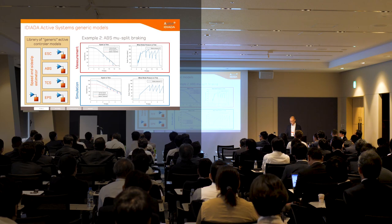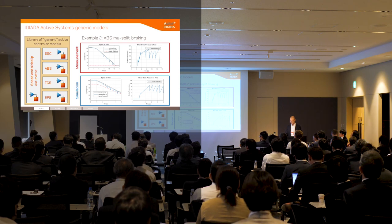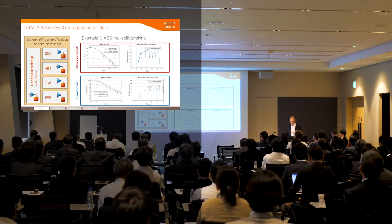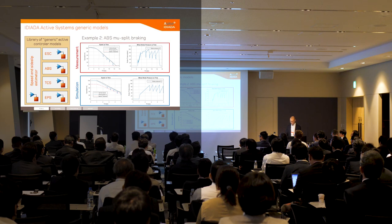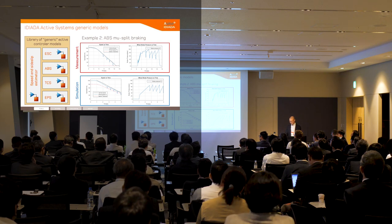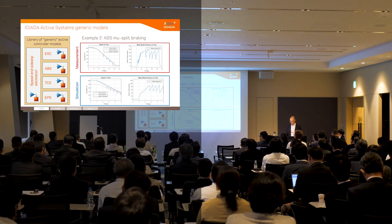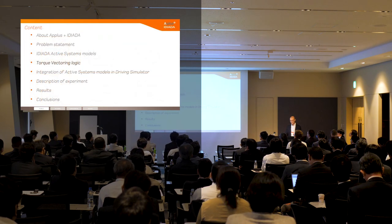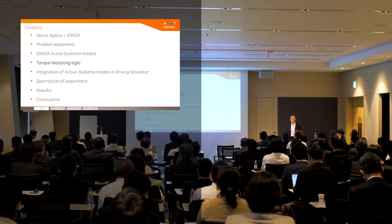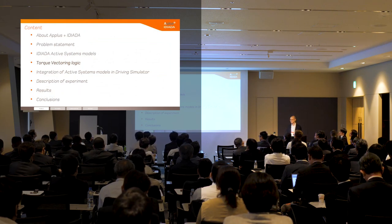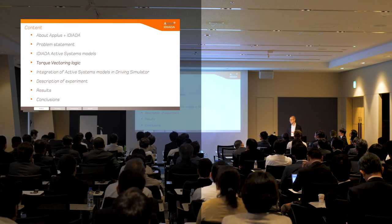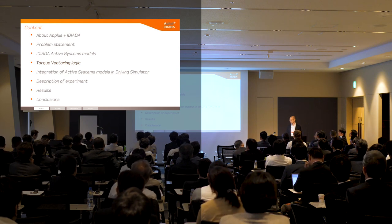Similarly for ABS mu-split braking: on the left side we have wheel speed versus time, and on the right side the brake actuation on the front-left wheel as an example. This represents the basic ESC system used for this case study.